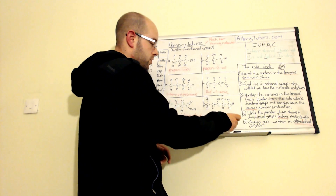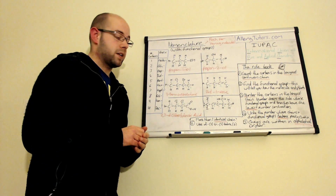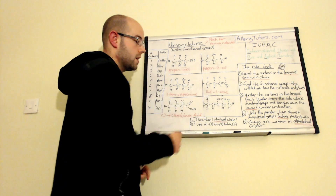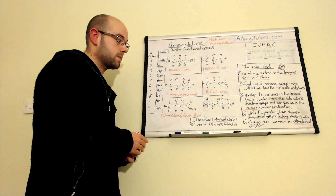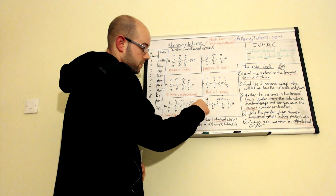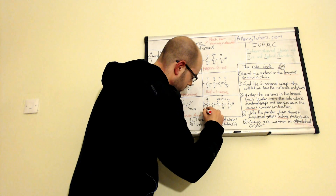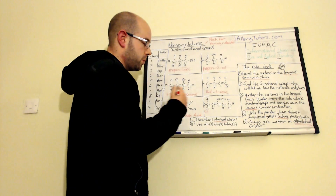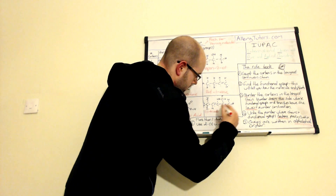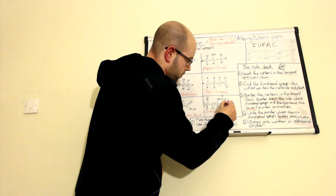We get all the prefix functional groups out of the way first - the iodines and the methyls - and they go in alphabetical order. 'I' comes before 'M', so we do the iodines first. We have three iodines and we have to number all three positions. Because we've got three identical ones, we use 'tri'. The three iodines are all on the first carbon, so that's 1,1,1-triiodo. You have to put all three numbers down - you can't just write 'one triiodo'. Then we put a hyphen, and the methyl group is hanging off the fourth carbon, so that's 4-methyl.